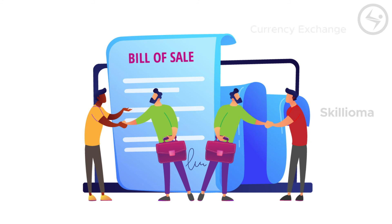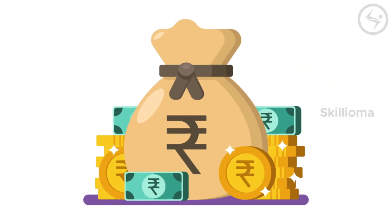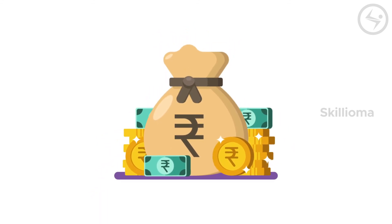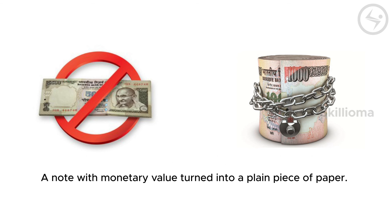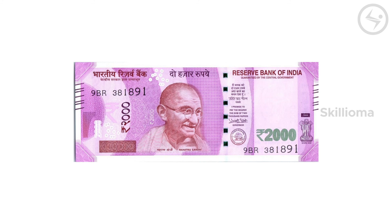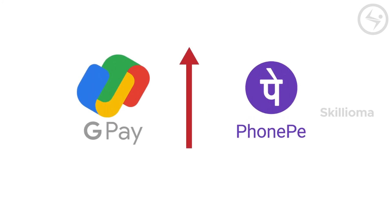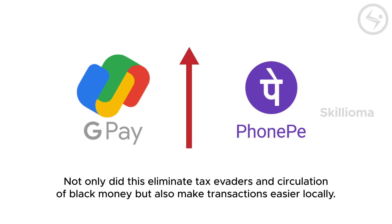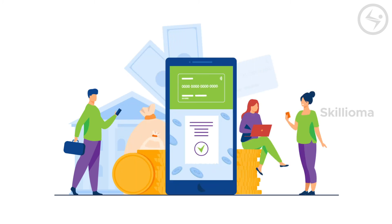Now let's jump back to the Indian currency. The Indian currency has always seen ups and downs, but in 2016 the people of India were shaken when demonetization took place. The 500 and 1000 rupee notes were in use, but Prime Minister Modi decided to demonetize them — just like that, notes with monetary value turned into plain pieces of paper. Then the 2000 rupee note was introduced. Since then, the use of UPIs like Google Pay and PhonePe has gone up, marking the advent of digitalization, eliminating tax evaders and the circulation of black money while making transactions easier.